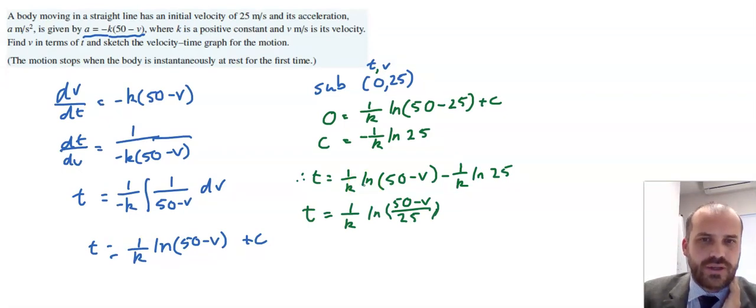After rising, you get the 1/k out the front. And then, using log laws, you can divide by 25. And we get this here.